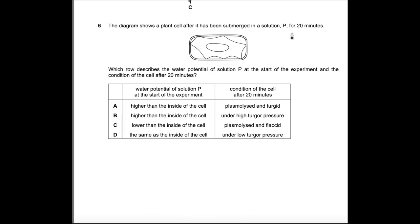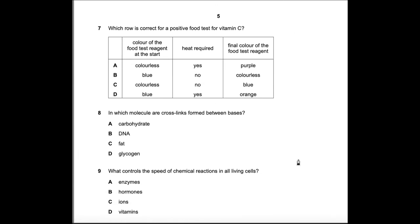Question 6: A plant cell was submerged in solution P for 20 minutes. The diagram shows a plasmolyzed cell. For plasmolysis to occur, the solution outside must have a lower water potential than inside the cell, so water exits via osmosis. The only matching option is C: solution P has lower water potential than inside the cell, and the cell becomes plasmolyzed/flaccid. Answer: C.